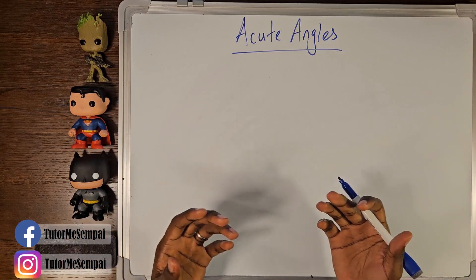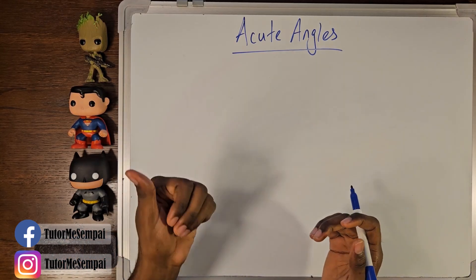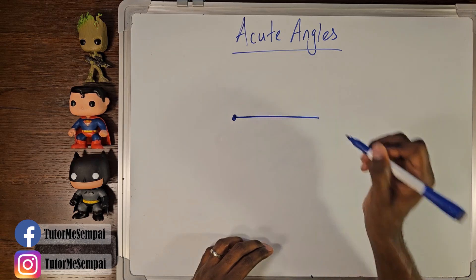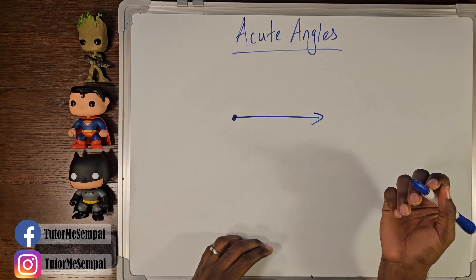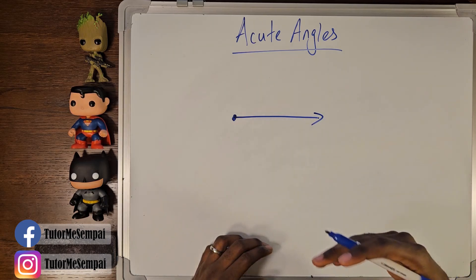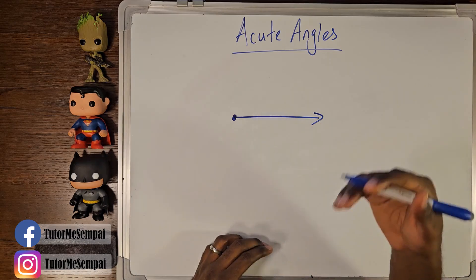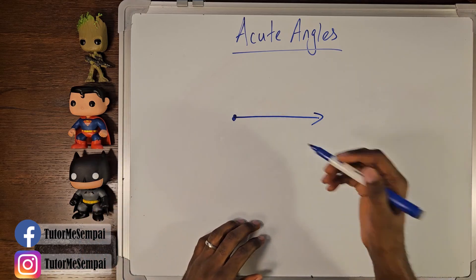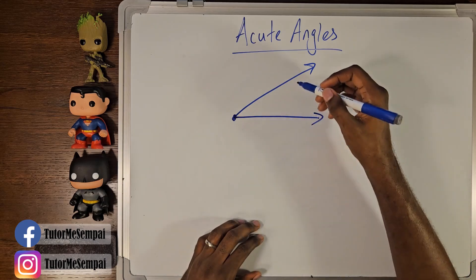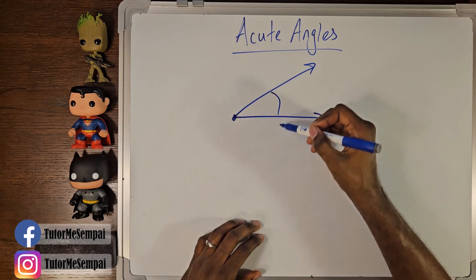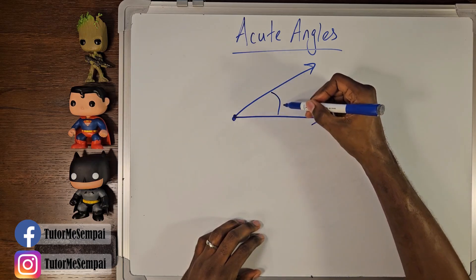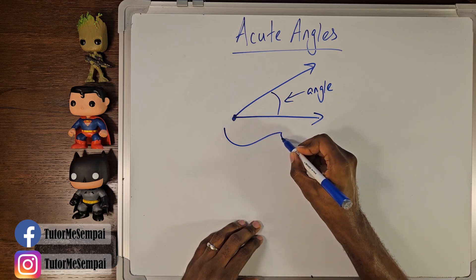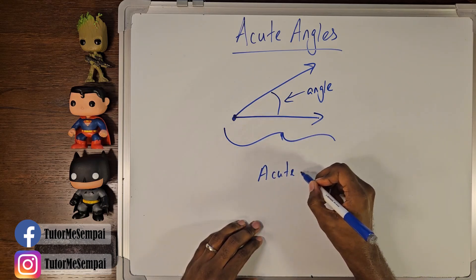Today we're gonna form our angles using two rays. On this channel, we've talked about lines, line segments, and rays. A ray is going to start at a point, go out a certain distance and have an arrow there. We're gonna form an angle with two rays. The first angle that we're gonna form is gonna be called an acute angle. Notice that there's space in between, and how we denote that space is we draw some kind of curved line — this is our angle — and this whole thing is going to be an acute angle.